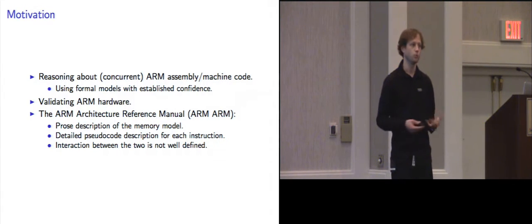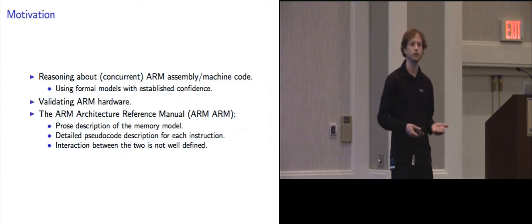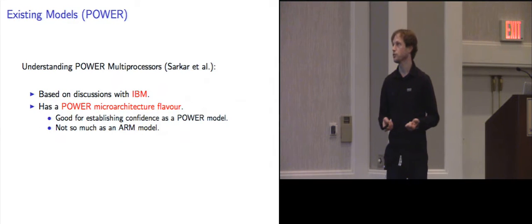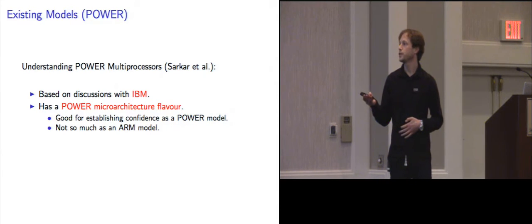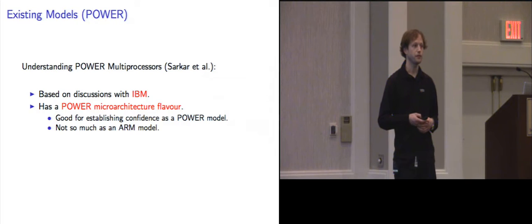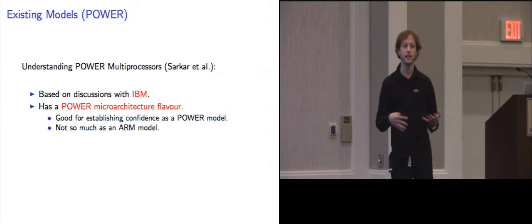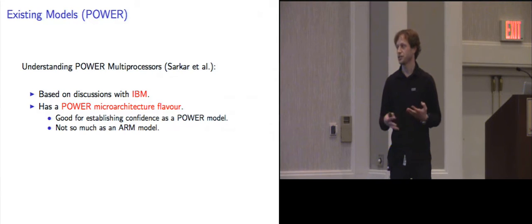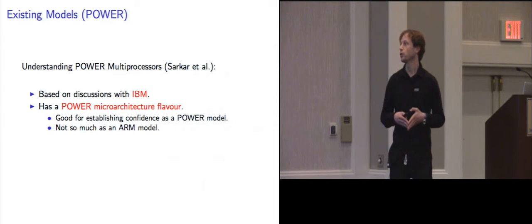We want a formal model for the architecture, and we can't really use the reference manual because it's not formal enough. So why don't we use existing models? There is Sarkar's model for the Power microarchitecture. That model was developed with the help of IBM staff. It has a Power microarchitectural flavor to it, and as such it's very good to establish confidence in it as a Power model, but not so much as an ARM model, since the ARM microarchitecture is quite different from the Power microarchitecture.